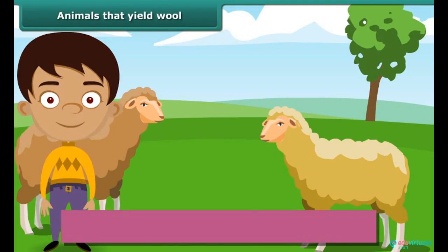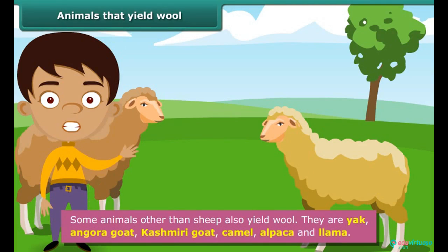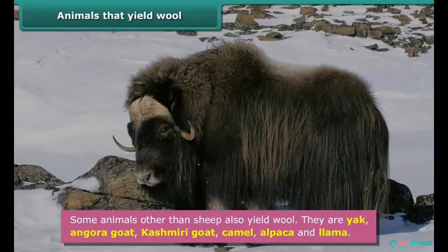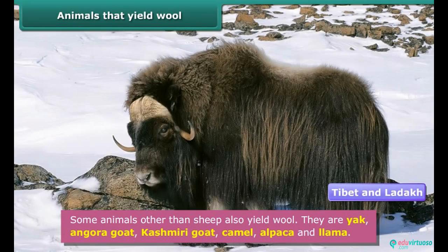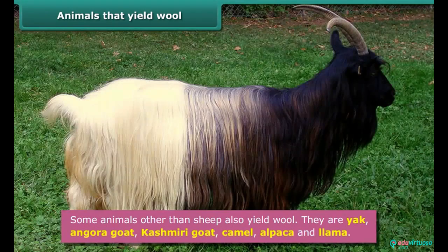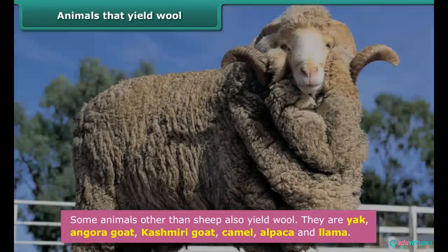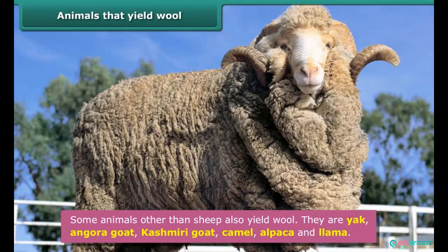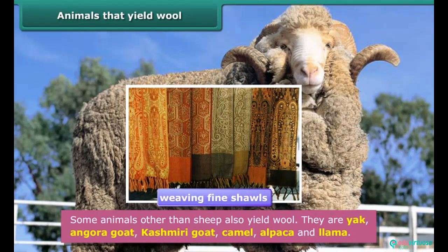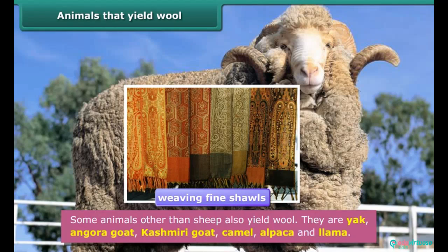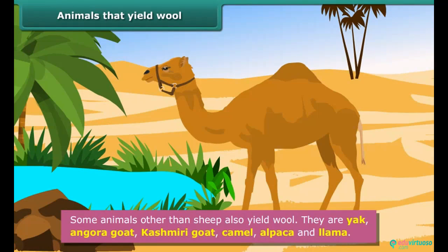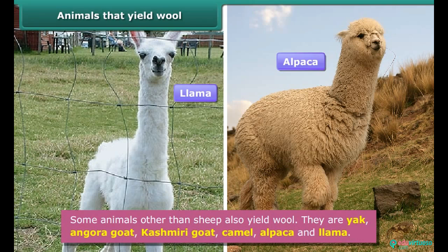Some animals other than sheep also produce wool. Yak wool is common in Tibet and Ladakh. The angora goat is found in hilly regions such as Jammu and Kashmir, and the wool obtained from it is called angora wool. The Kashmiri goat produces very soft wool used in weaving fine shawls, popular as pashmina shawls in India. The fur on the body of a camel is also used as wool. Llama and alpaca, found in South America, also yield wool.